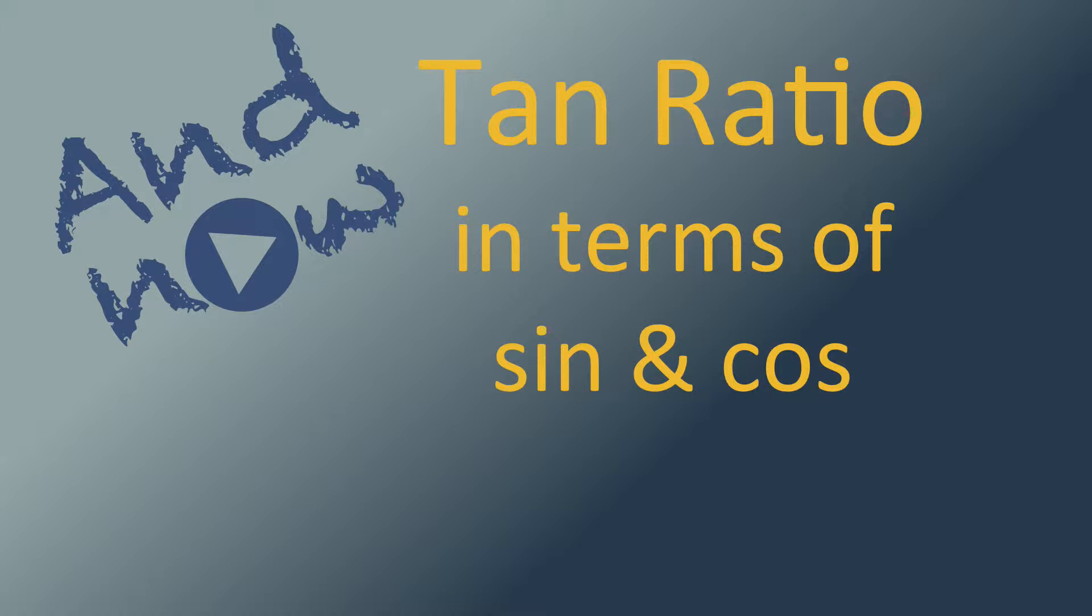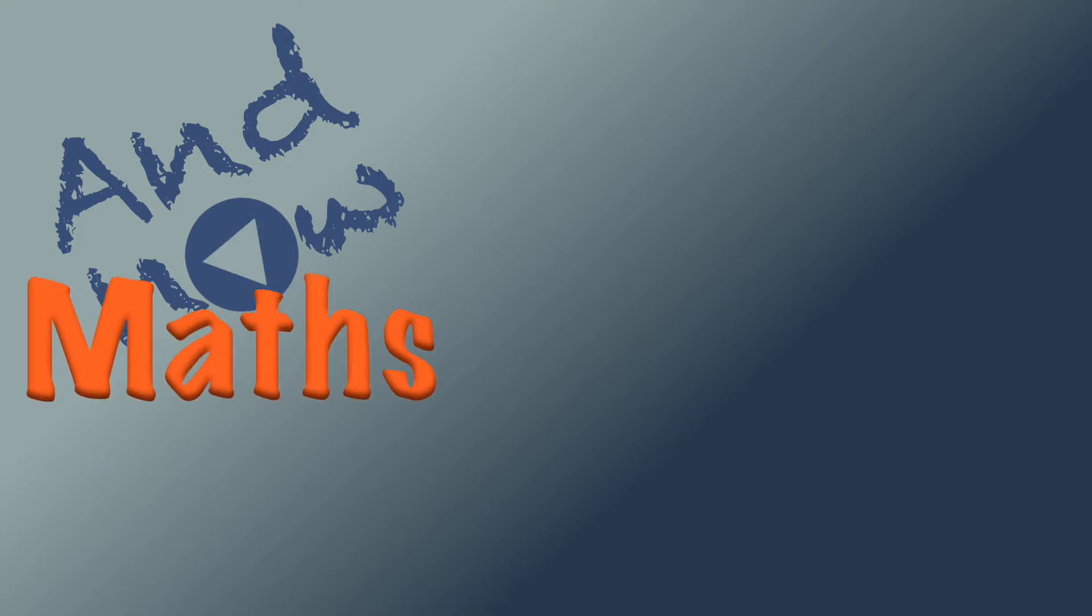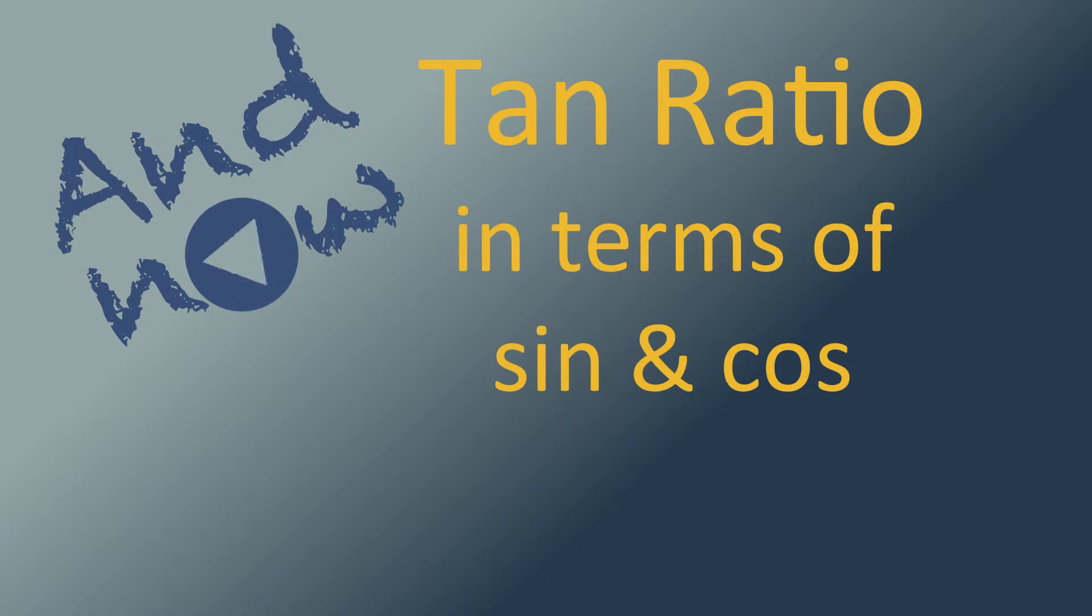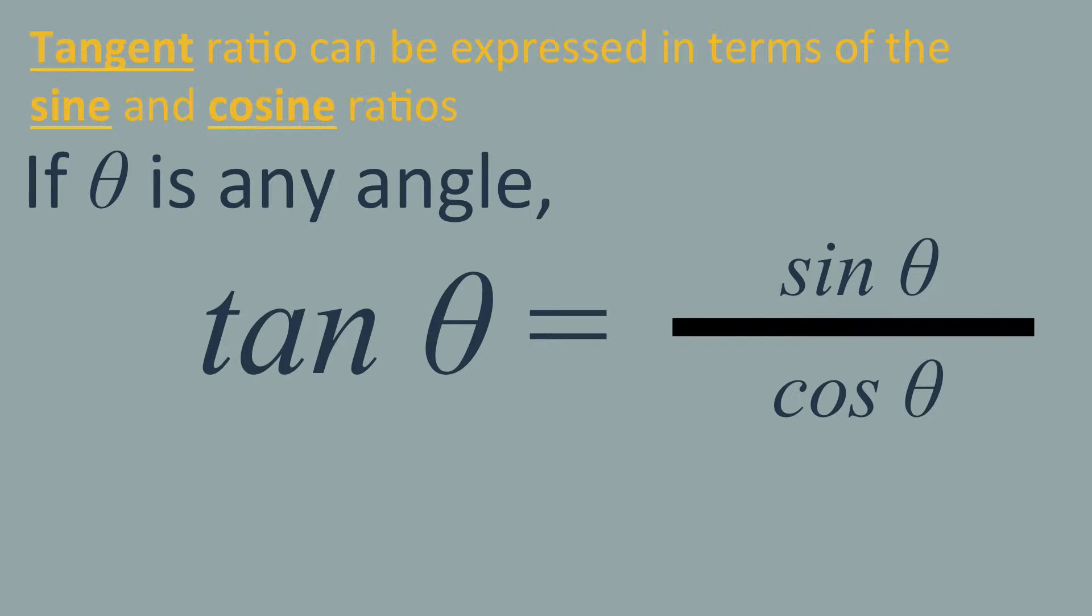Tangent ratio in terms of sine and cosine. If theta is any angle, tangent theta equals sine theta divided by cosine theta.